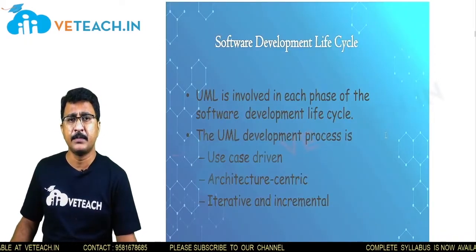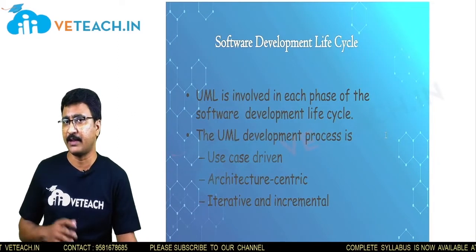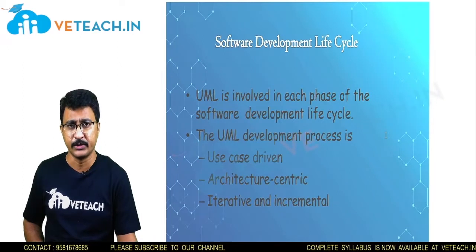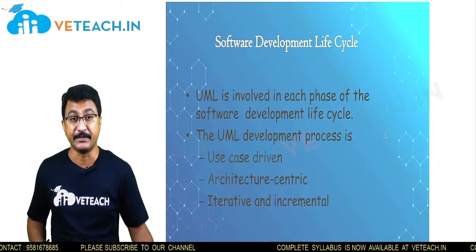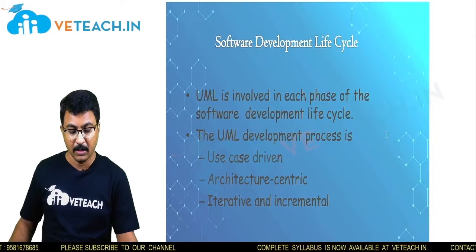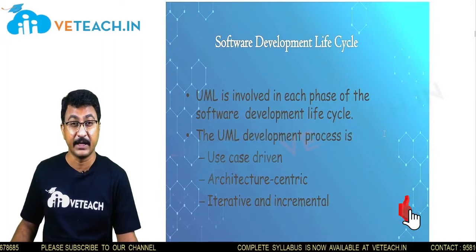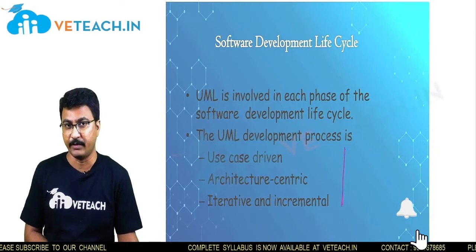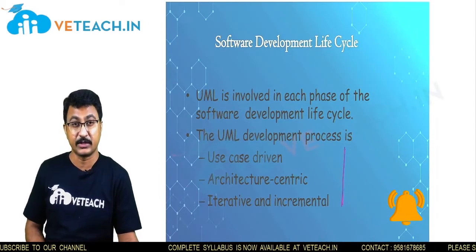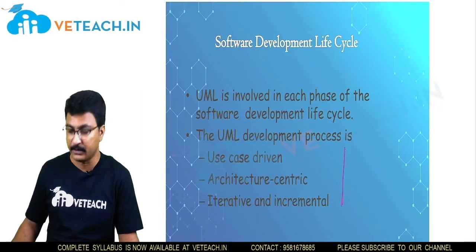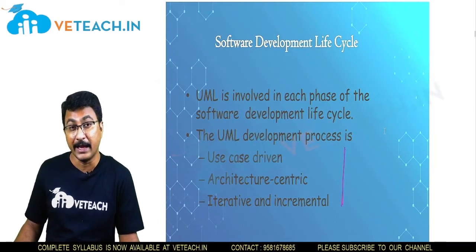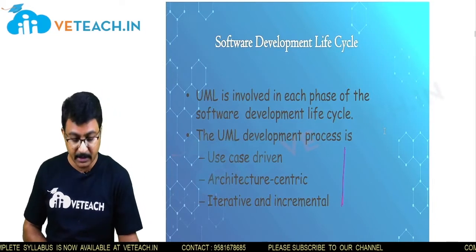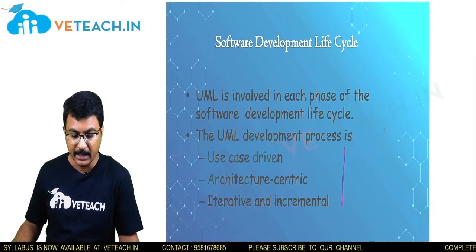As in the case of system development there is a software life cycle, the same applies to a UML model — a software development life cycle. There are three aspects of representing it: one is use case driven, two is architecture centric, and three is iterative and incremental.